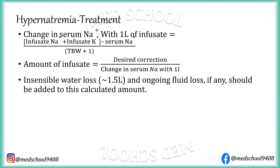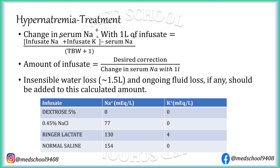To use this formula, we need to know the concentration of sodium and potassium in different fluids used in treatment of hypernatremia. Water contains negligible amounts of sodium and potassium. In IV fluids: 5% dextrose contains no sodium or potassium; 0.45% saline contains 77 mEq per litre of sodium and no potassium; Ringer's lactate contains 130 mEq per litre of sodium and 4 mEq per litre of potassium; and normal saline contains 154 mEq per litre of sodium and no potassium.